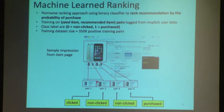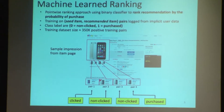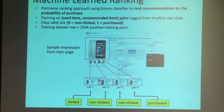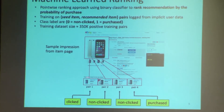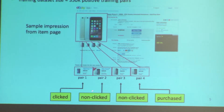For machine-learned rankings, we use a point-wise ranking approach, reducing the ranking problem to a binary classifier, and rank recommendations based on probability of purchase. In search, you train on keyword-to-URL pairs; we train on seed item and recommended item pairs. So for a given impression, we have the seed and recommended item, with labels like clicked, non-clicked, or purchased. I'll show you why we chose non-clicked and purchased as the class labels.